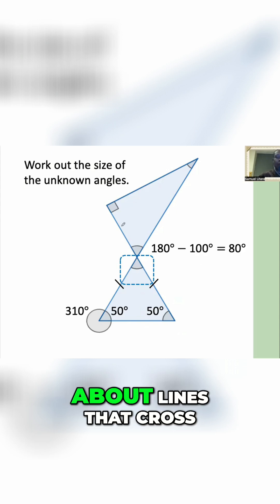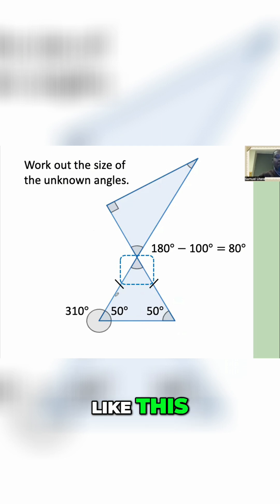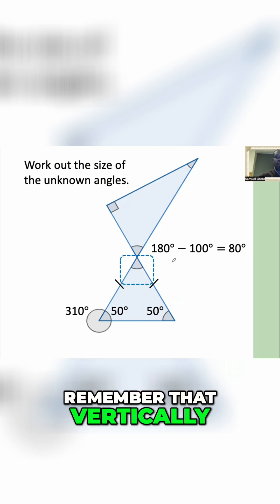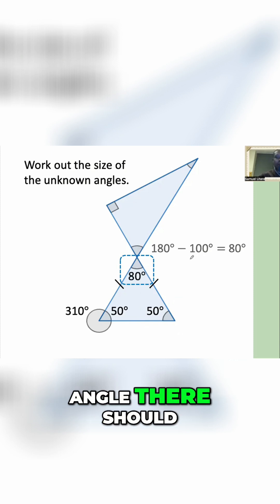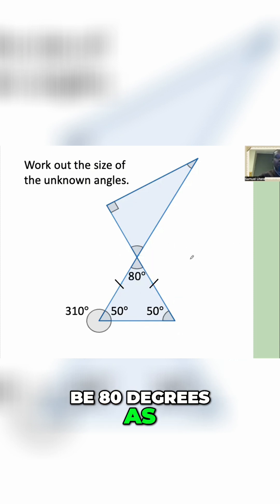What do you know about lines that cross like this? I'm sure you remember that vertically opposite angles are equal. So this angle there should be 80 degrees as well.